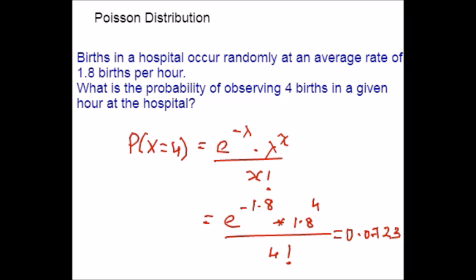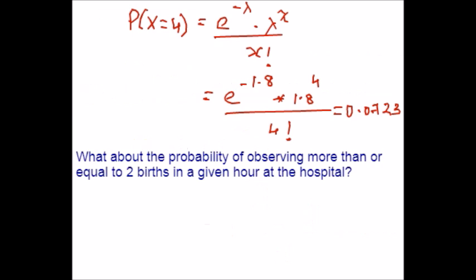What about the probability of more than or equal to 2 births in a given hour at a hospital? I will write it both in statement form and symbolic way. If you write it symbolically, it is greater than or equal to. It means we want to find probability of X greater than or equal to 2. Probability of x equals 2 plus probability of x equals 3 and it keeps on going. An infinite number of probabilities have to be calculated for this part.